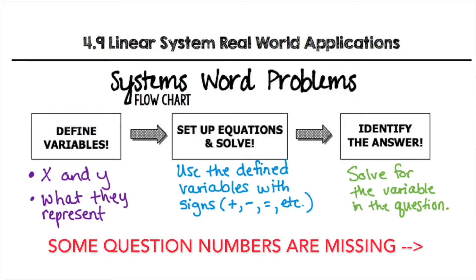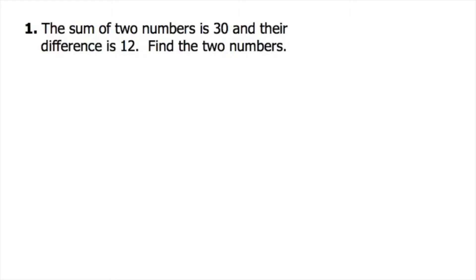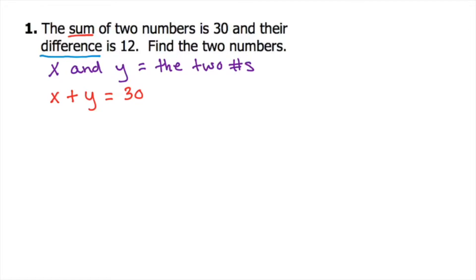For number one: the sum of two numbers is 30 and their difference is 12 — find the two numbers. First, make sure you know what sum and difference mean, since we use them frequently in math. Sum means you're adding them together and difference means you're subtracting them. So we're going to make x and y represent the two numbers. The sum of those two numbers equals 30, so that's x plus y equals 30. Whenever you see the word 'is,' that means it's an equal sign.